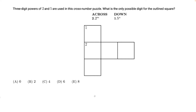Three-digit powers of 2 and 5 are used in this cross-number puzzle. What is the only possible digit for the outline square? This is the outline square, since it doesn't show up clearly.